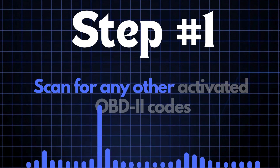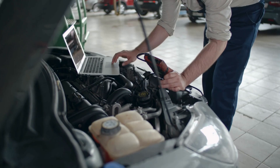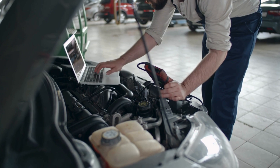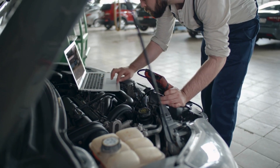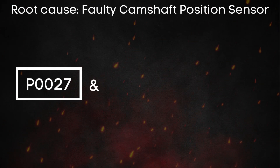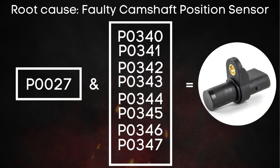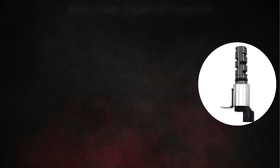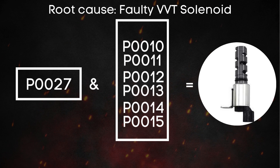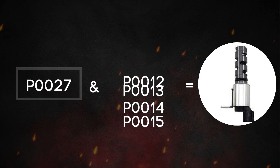The first step is to scan for any other activated OBD2 codes. This helps us pinpoint where we need to focus. If there are other codes related to a faulty camshaft sensor, we should focus on the camshaft sensor. Similarly, if there are codes related to the VVT solenoid, that's where our attention should go.